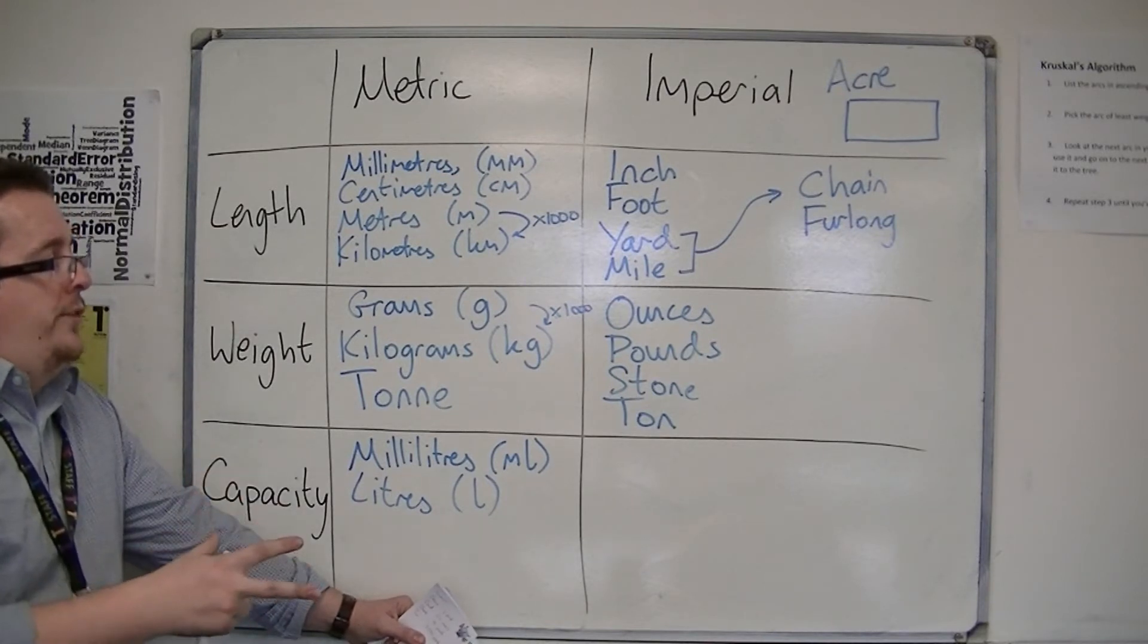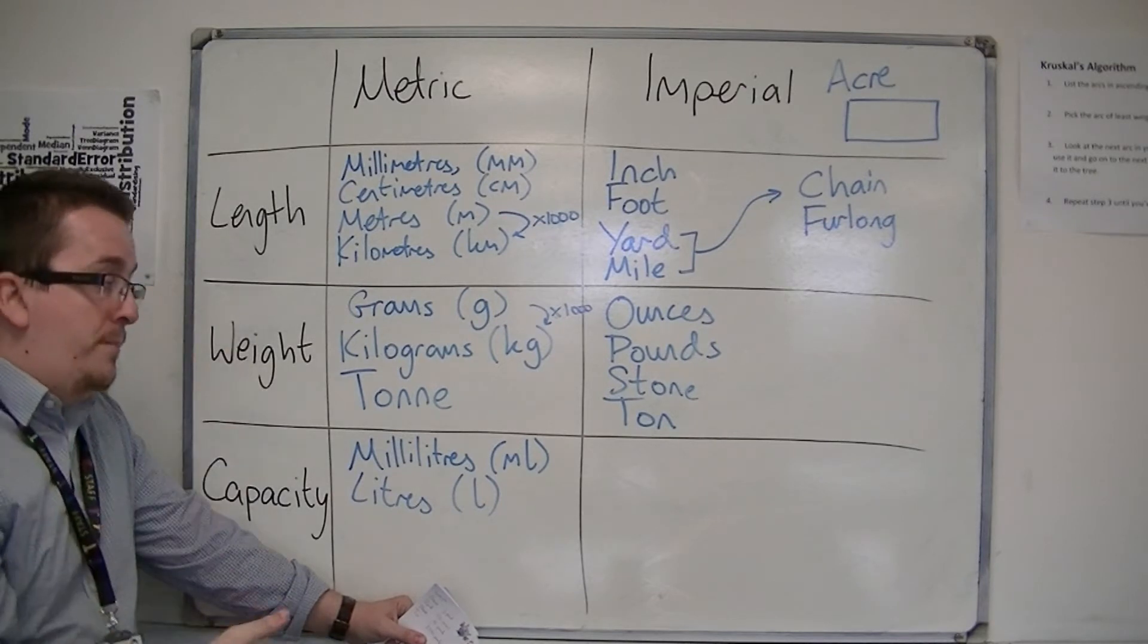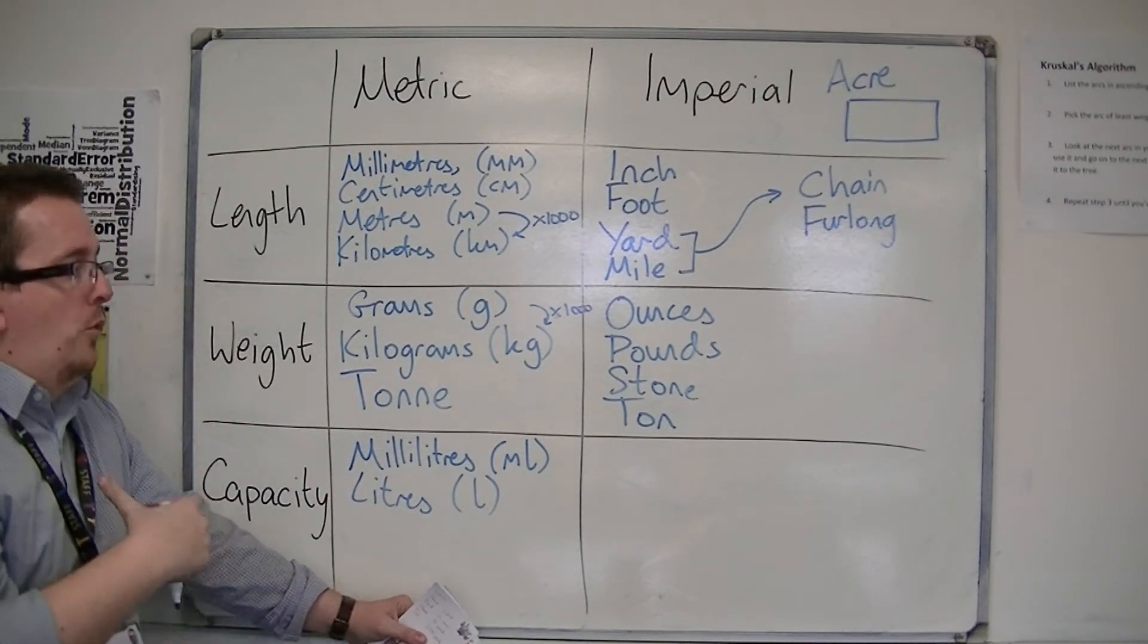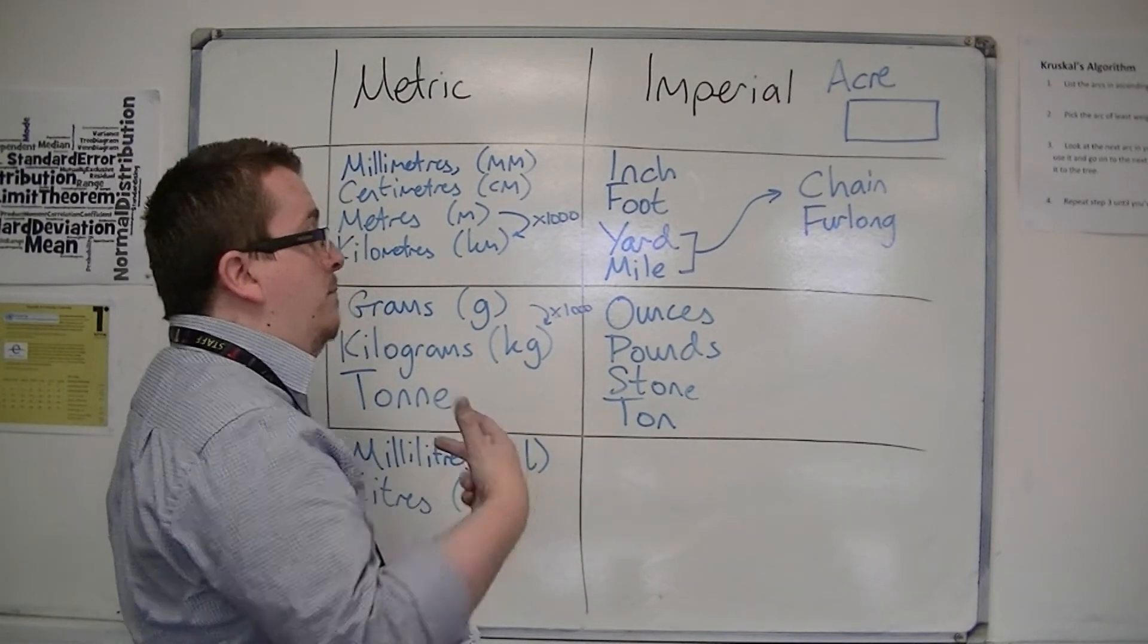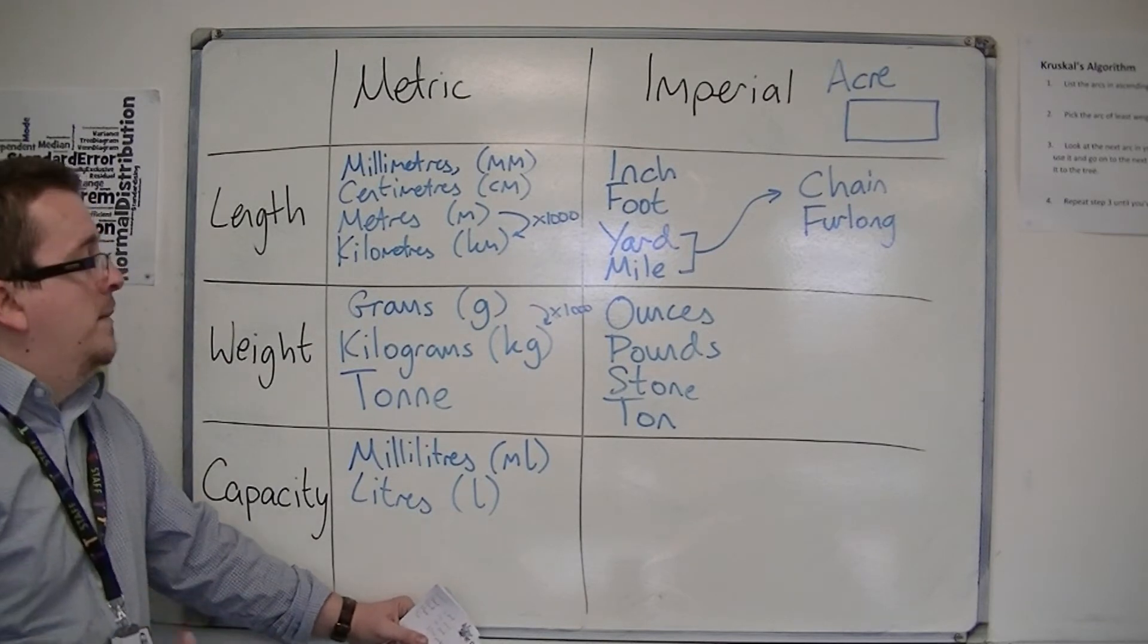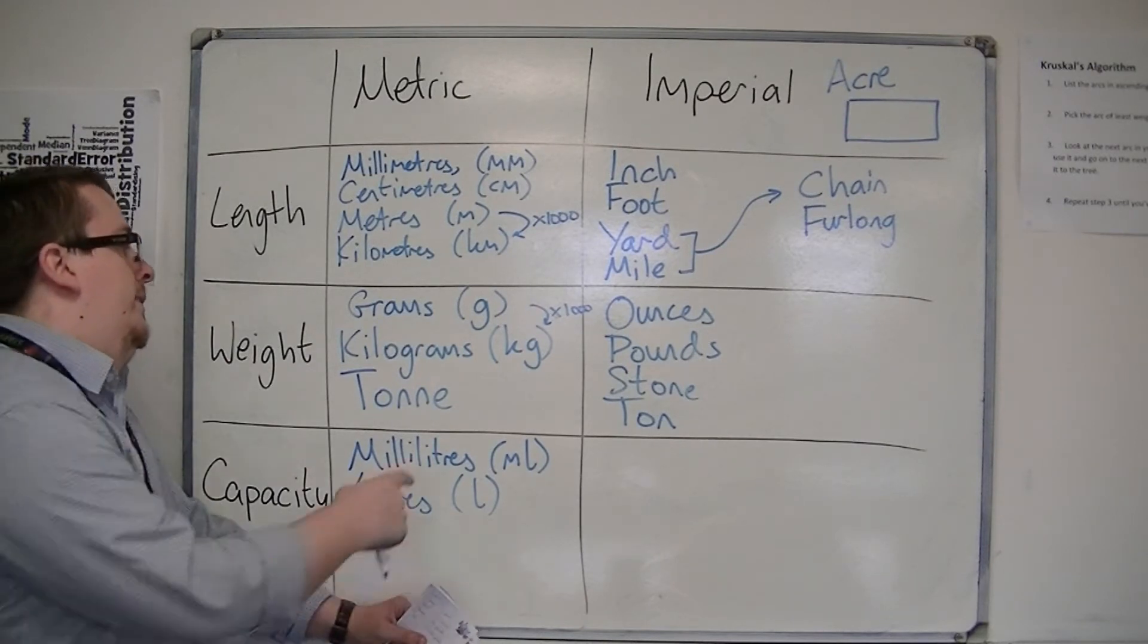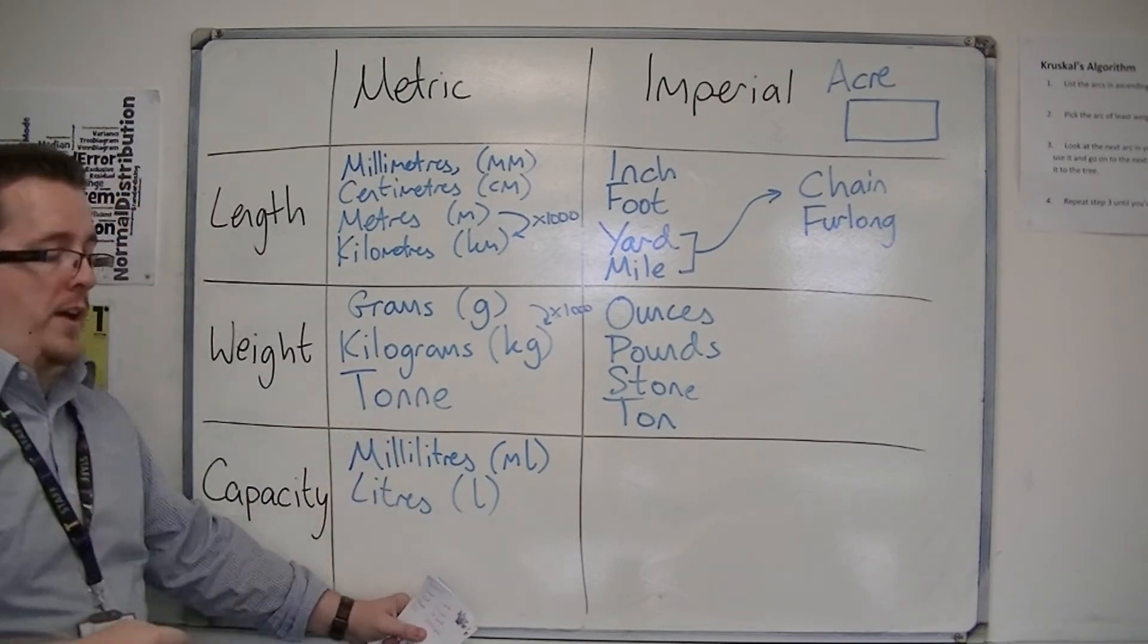Generally, what we use in the UK is we use imperial measurements for weights. On our roads we have, as I said, miles an hour. We use feet and inches. But for weight, if you see tonne, then that is the metric tonne, generally.